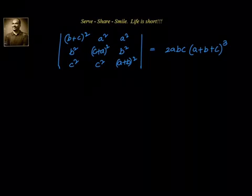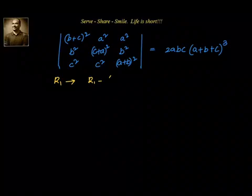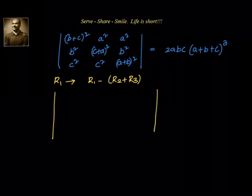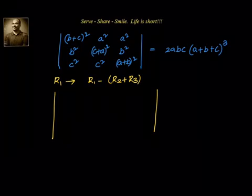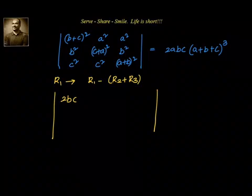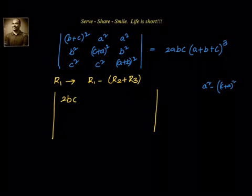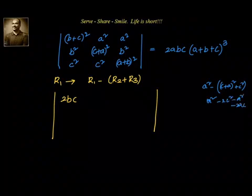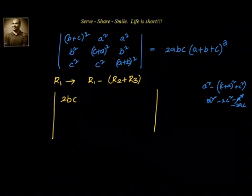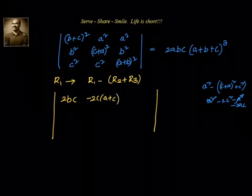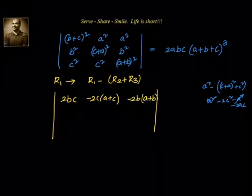Let's apply R1 assigned as R1 minus (R2 plus R3). The first element of R1 becomes (b+c)² minus (b²+c²), which gives 2bc. The second element becomes a² minus (c+a)² plus c², which simplifies to a² minus 2ac minus a², giving minus 2c(a+c). Similarly the third element gives minus 2b(a+b).